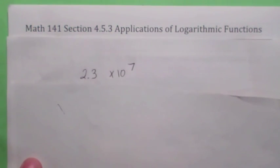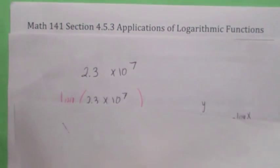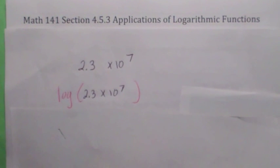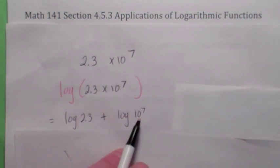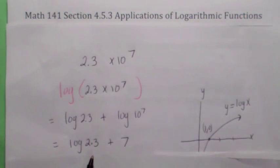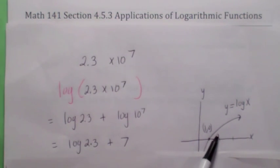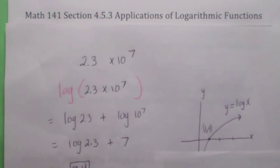For example, take this number: 2.3 times 10 to the 7th. When you take the logarithm base 10 of that number and use your logarithm properties, you could write it as a sum — product turns into a sum. The log base 10 of 10 to the 7th is just 7. And the log base 10 of 2.3 — if you look at the graph of log base 10 of x, when you give it a number close to 1, you get a positive value, but it's not going to be very big. So it does contribute a little bit, but not very much. The logarithm of this number is primarily the exponent — that's what determines it mainly.